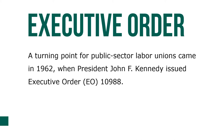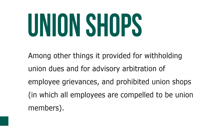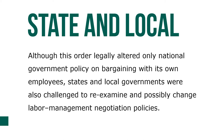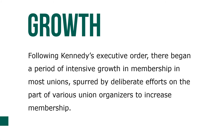A turning point for public sector labor unions came in 1962 when President John F. Kennedy issued Executive Order 10988. It extended to national government employees the right to organize and engage in collective bargaining. Among other things, it provided for withholding of union dues, advisory arbitration of employee grievances, and prohibited union shops in which all employees are compelled to be union members. Although this order legally altered only national government policy, states and local governments were also challenged to re-examine and possibly change their labor-management negotiation policies.